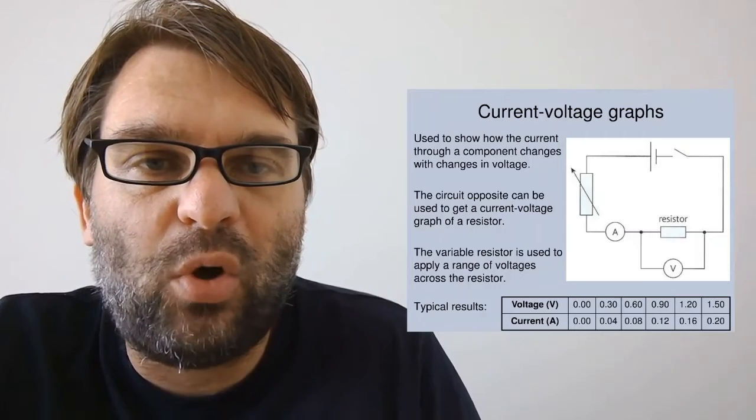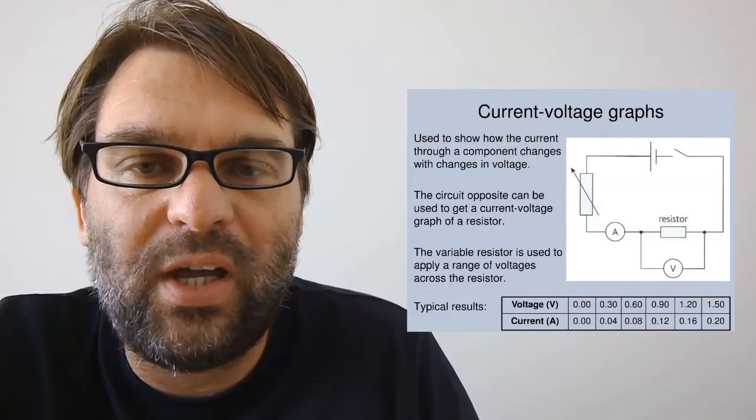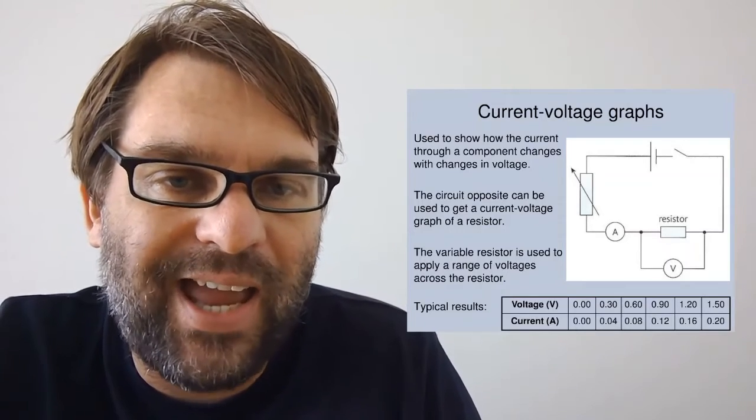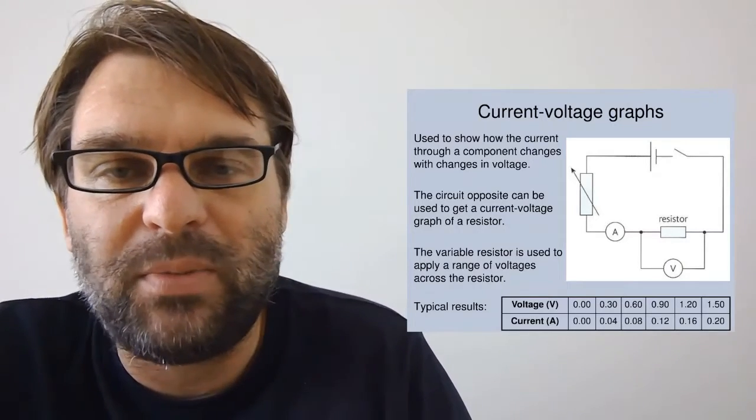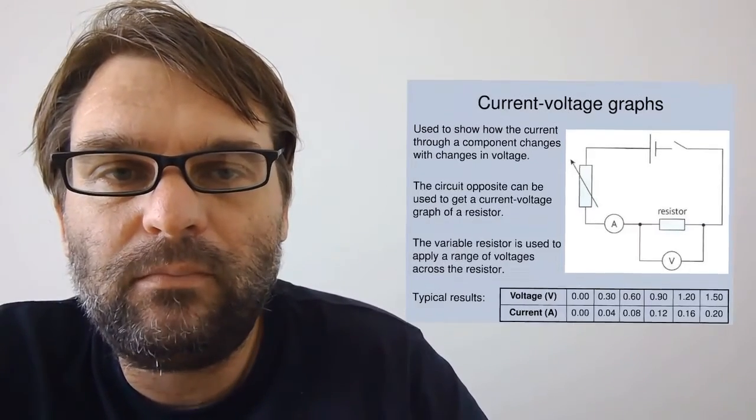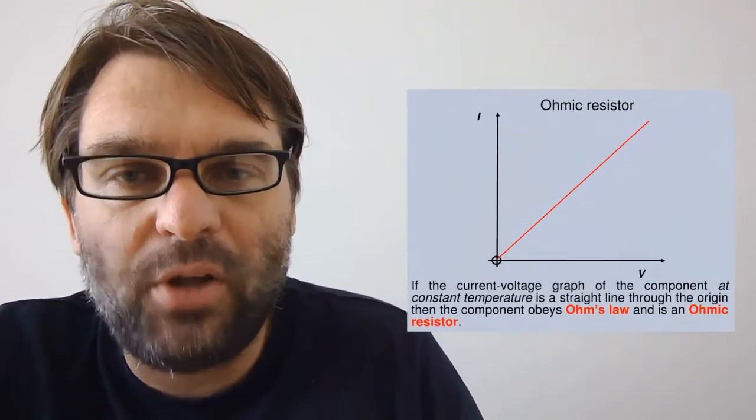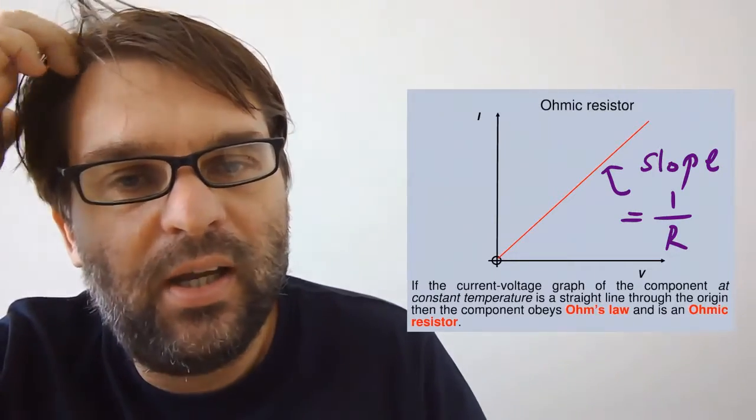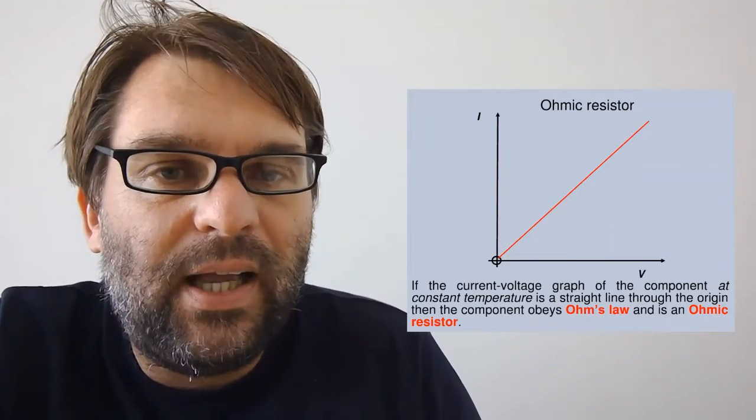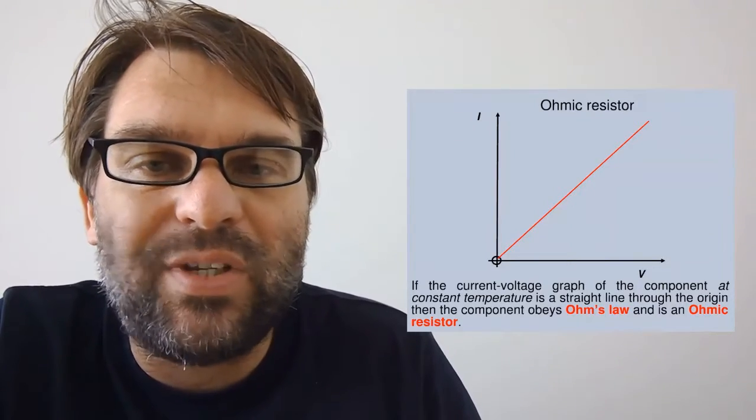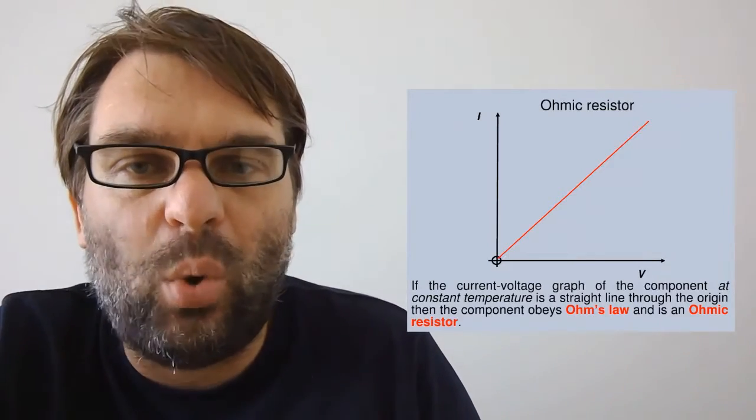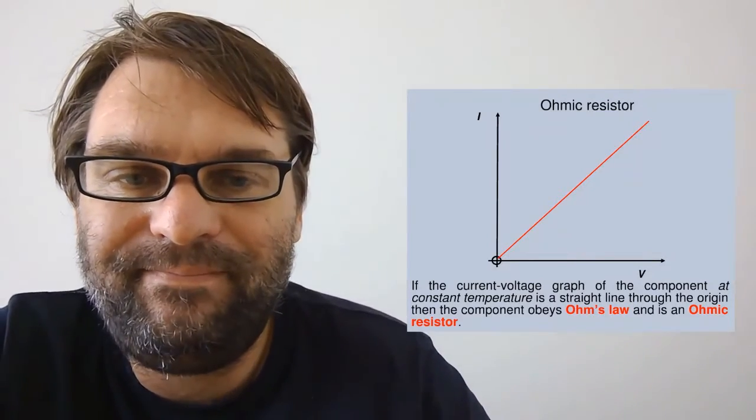The variable resistor will adjust the current so you get a range of different voltages and currents. There are some typical results there at the bottom of the slide. If you plot those results and your current-voltage graph is a straight line at constant temperature, then it means that the resistor obeys Ohm's law, and therefore we call it an ohmic resistor.